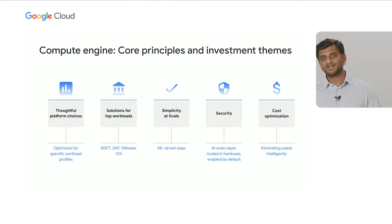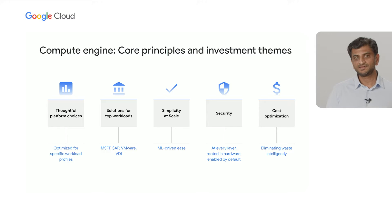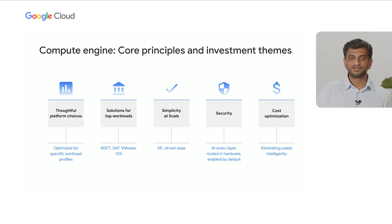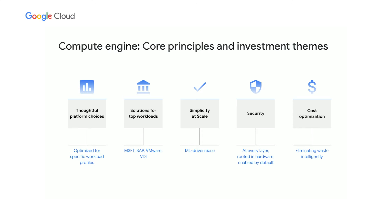Let's get right to it and start with some of the investment themes and principles that drive us. First, Google Cloud Compute Engine is all about offering you thoughtful and intuitive choices — making it easy to select the right virtual machine type and the right storage type, simply by looking at how we've organized our choices by workloads or by use case.